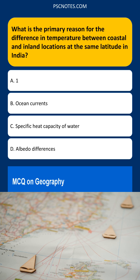While ocean currents do influence coastal temperatures, their effect is secondary to the direct impact of water's high specific heat capacity on air temperatures. Currents transport heat, but the primary driver of temperature moderation is the water itself.